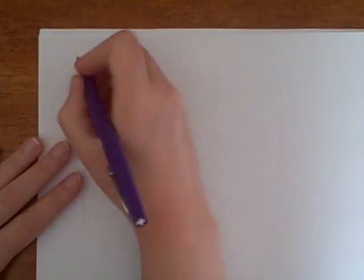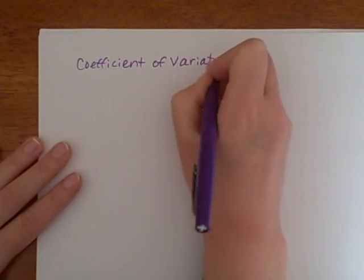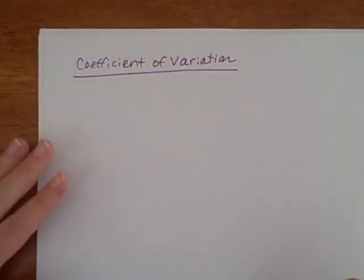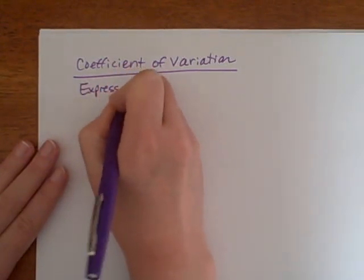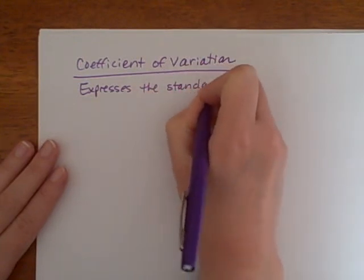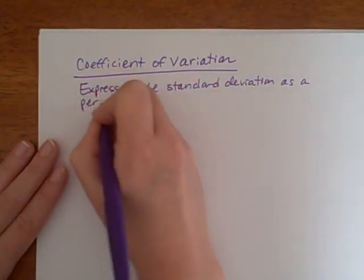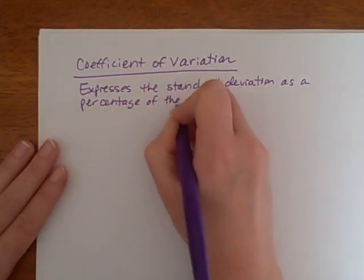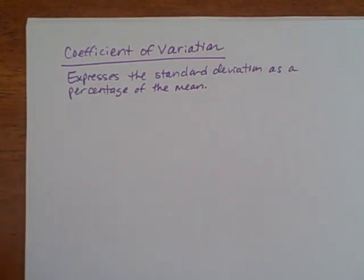The last thing that you'll see in the textbook talking about measures of spread is something called the coefficient of variation. And the coefficient of variation basically expresses the standard deviation as a percentage of the mean.